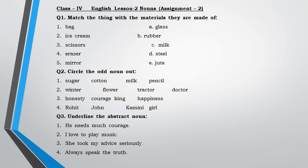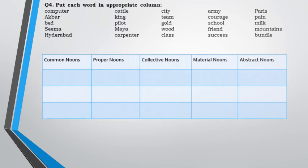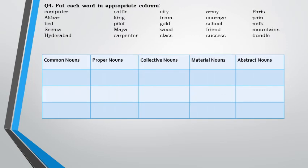Question 3: underline the abstract noun — identify the word that is a quality, feeling, emotion, or idea. Question 4: put each word in the appropriate column. You are given five types of nouns and some words — you have to sort each word into the correct category: common, proper, collective, material, or abstract noun. That is a very easy assignment. You can do it by yourself.